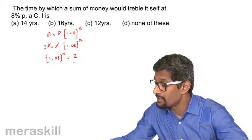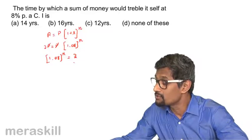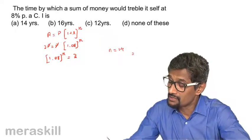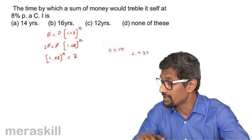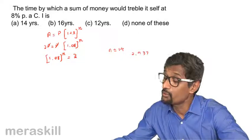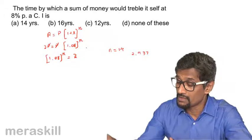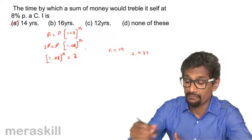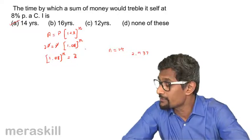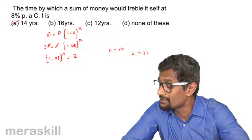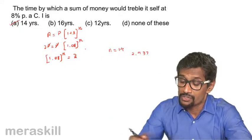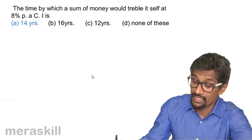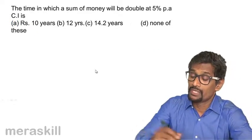When 1.08 is multiplied by itself 14 times you get 2.937, and multiplied once more you get 3.172. So among these it is either 14 years or 15 years, definitely not 16. Since 14 is closest to 3, N will be 14. N raised to 15 gives 3.172, which is also close, but here 14 years is the right answer. So N is 14 years.